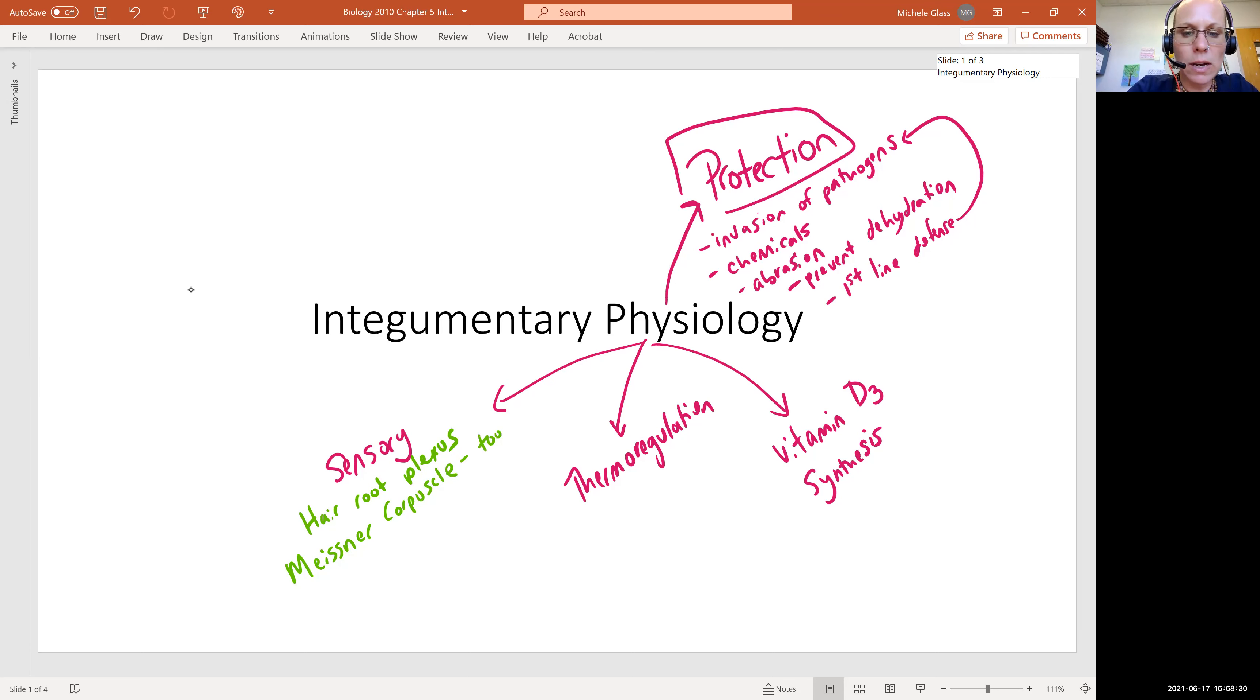We saw this in the dermis, and this is going to detect touch. We have also Pacinian corpuscle, which is going to detect vibration. We've picked out, talked already about the Merkel cell in the epidermis. We saw that in the stratum basale layer, which is also helping to detect touch. And then we're going to have pain and temperature receptors in the cutaneous membrane as well. So of course, as humans, we're very familiar with that.